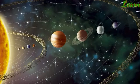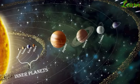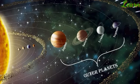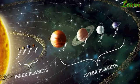Mercury, Venus, Earth, and Mars are called inner planets. Jupiter, Saturn, Uranus, and Neptune are called outer planets. The outer planets have several moons and systems of rings. The inner planets are smaller than the outer planets. The outer planets are colder than the inner planets as they are farther away from the sun.